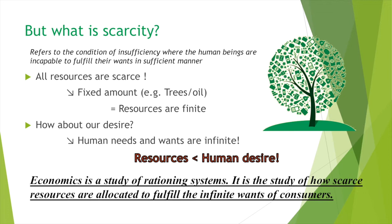On this planet Earth where we are living, we have natural resources and some other resources, but all those resources on earth are scarce. In other words, there are only a fixed amount of resources. For example, trees and oil are natural resources — they are not infinite, so if we consume too much we will eventually run out of those resources.